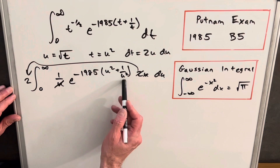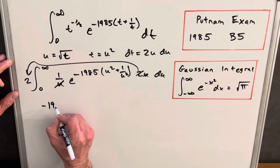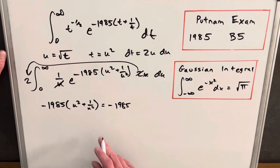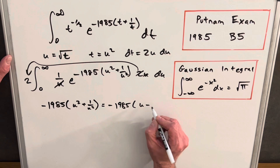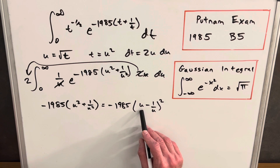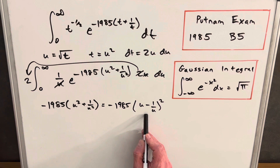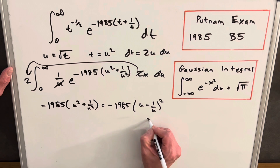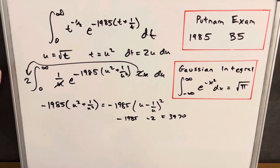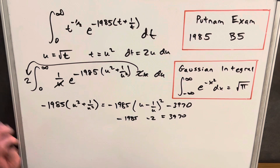We have squared terms, and we want to turn this into a perfect square. Let's look at (u minus 1/u) squared. Multiplying that out, we get u squared plus 1/u squared, but then we also get a minus 2 from the inner term. So we've created a minus 2, and we have a minus 1985 coefficient. Together that accounts for 3970. To keep the expression unchanged, we subtract off 3970.